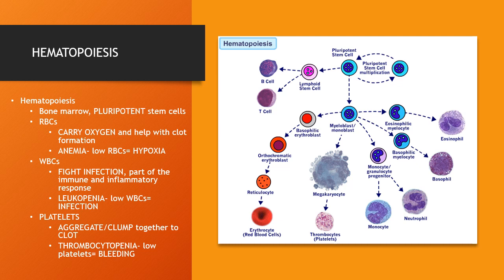Red blood cells are referred to as erythrocytes. These carry oxygen and help with clot formation. When we have low red blood cells, we have what we call anemia, and therefore the patient cannot transport enough oxygen to the cells of the body, and they have hypoxia.